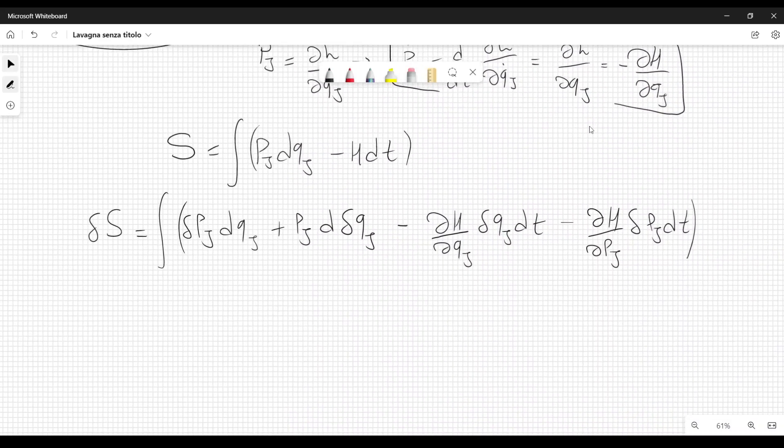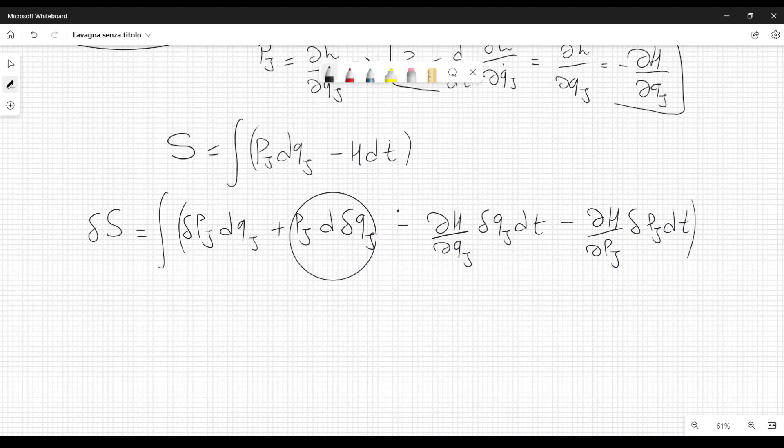Now we will integrate this second term here by parts, and since we consider that the variation of the positions and the momenta at the end points of our trajectory in phase space are equal to zero, we will get the following.